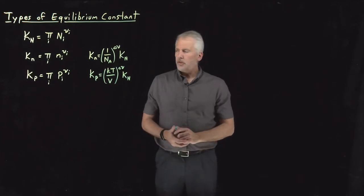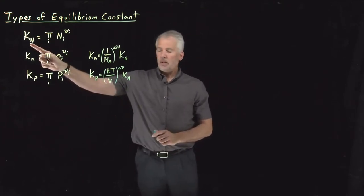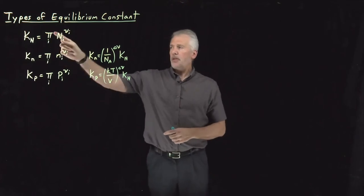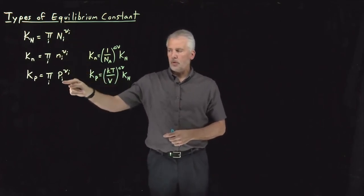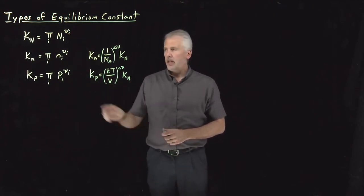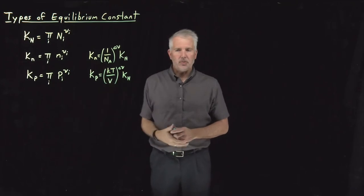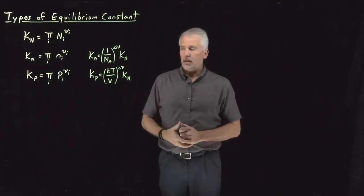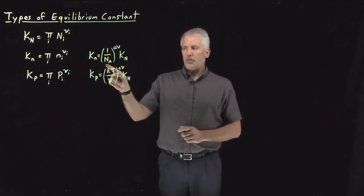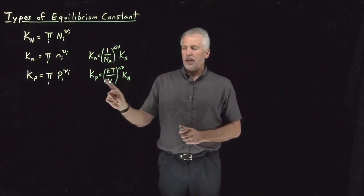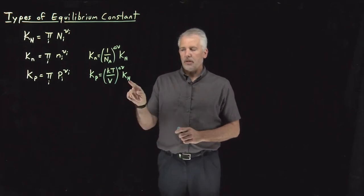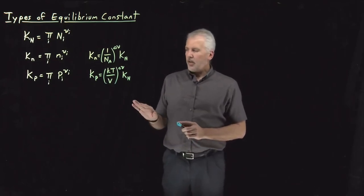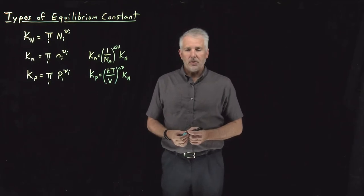We've seen several types of equilibrium constant: molecule-based, mole-based, and pressure-based. We can think of them all as products over reactants — molecules, moles, or pressures of the product raised to stoichiometric coefficients, and reactants raised to their stoichiometric coefficients, which are negative. We've also seen relationships for converting between these forms using Avogadro's number and the ideal gas law kt/V. There are other convenient forms of the equilibrium constant as well.